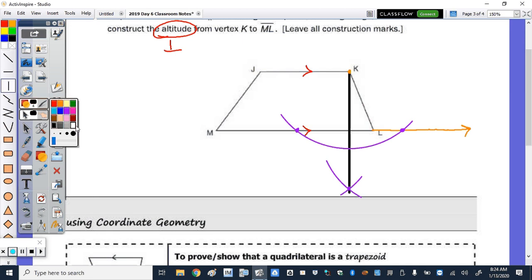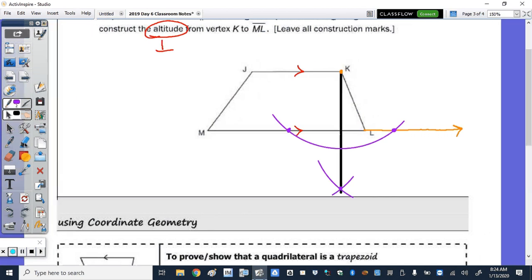Now, remember the altitude outside of the trapezoid is dotted. So I'm going to take the white pen and I'm going to make that part of it dotted. It's the only way I can draw a dotted line up on the board. So again, the altitude. It didn't say what to name the altitude. It just said from vertex K to ML. So that stops here. And I'll put it in the box.